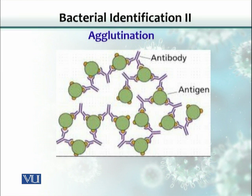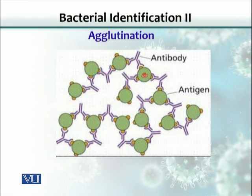Let's see what happens when we combine a bacterium with antibodies. On the surface of the bacterium there are different molecules with which these antibodies can interact, bind, or make bonds — this is antigen-antibody interaction. Antibodies are soluble products produced by lymphocytes; they are fluid-like secretions. When antibody is combined with a particulate matter such as bacteria or RBCs, this antigen-antibody interaction is called agglutination.